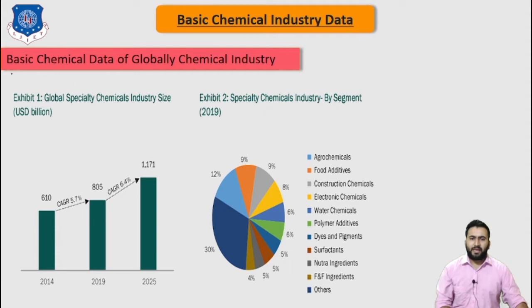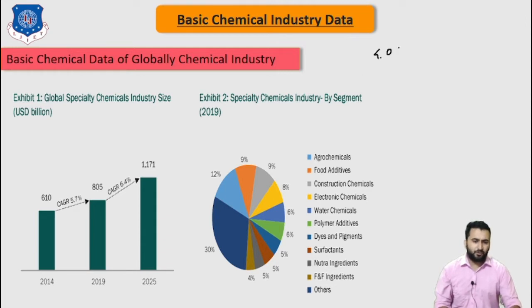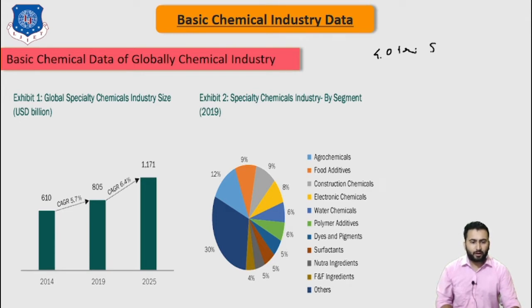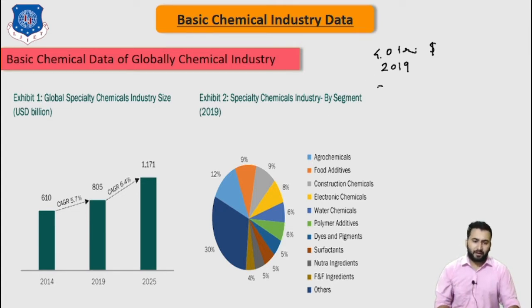The chemical industry plays an important role in the economic development of any country and the quality of life enjoyed by its people. The global chemical market was estimated to be around 4.0 trillion USD in 2019, with commodity chemicals making up 80% and specialty chemicals making up 20%.